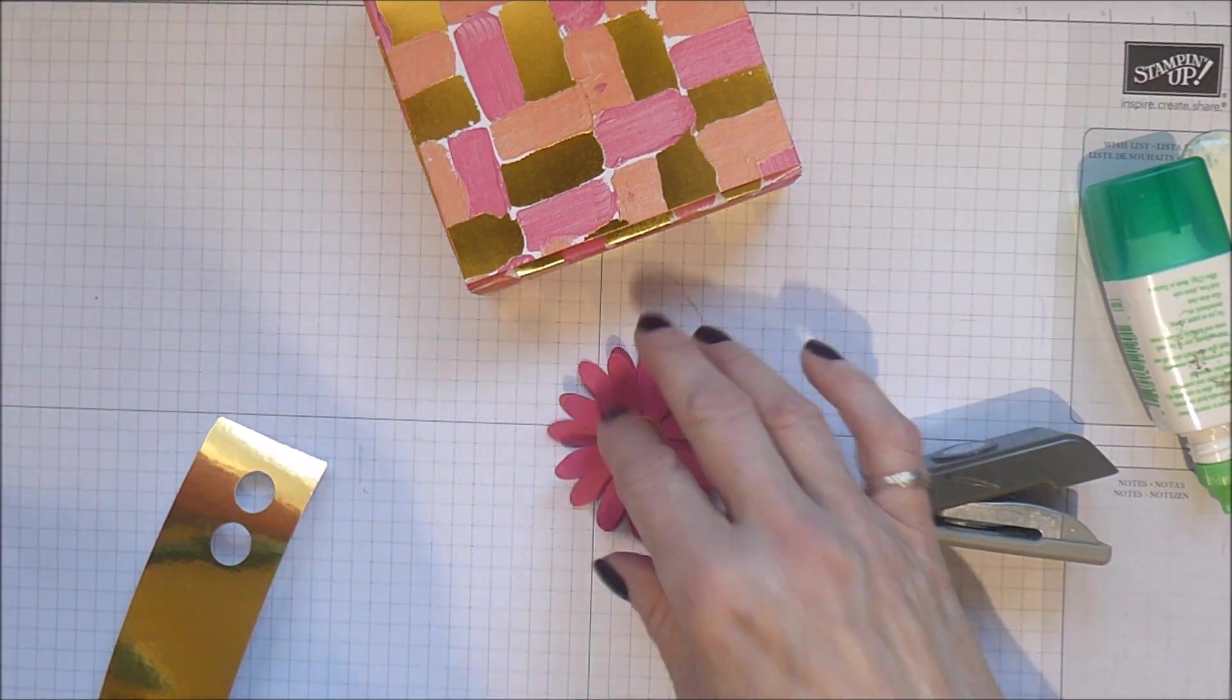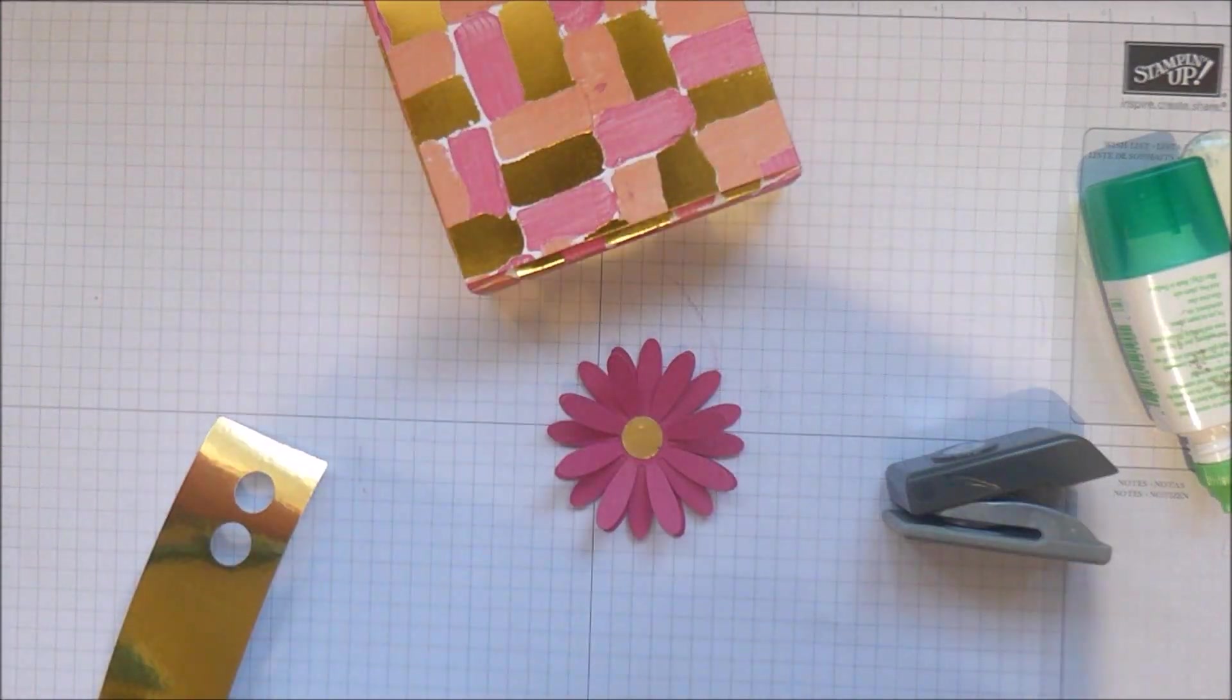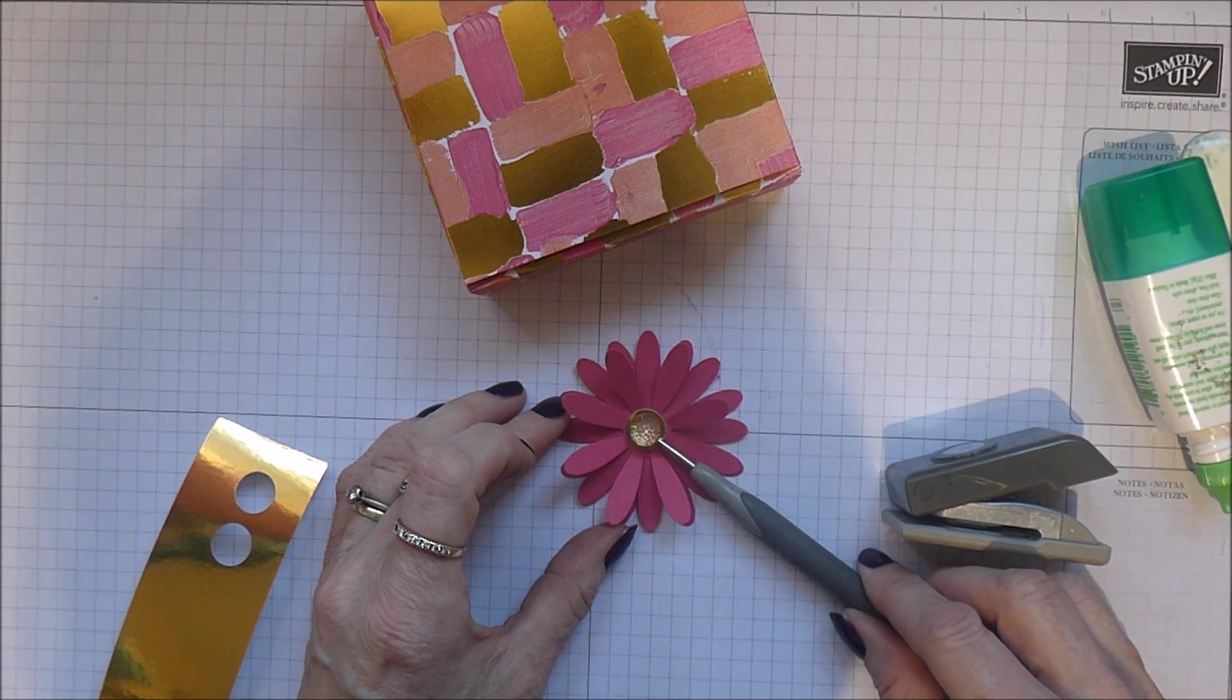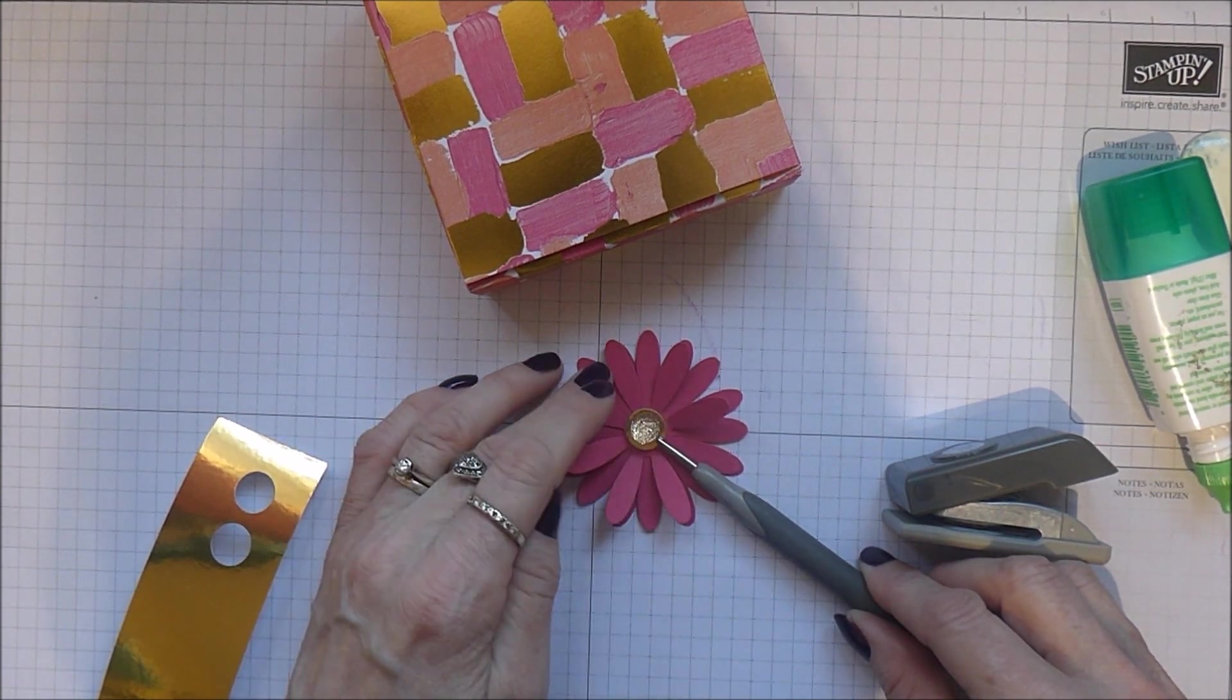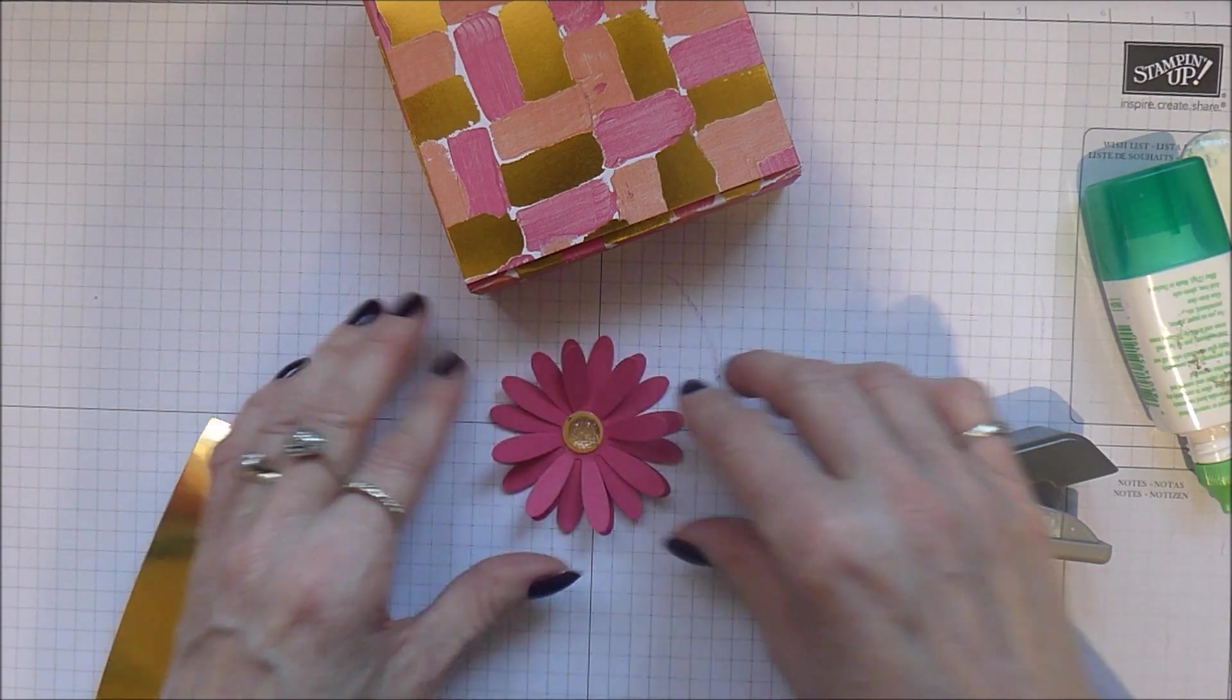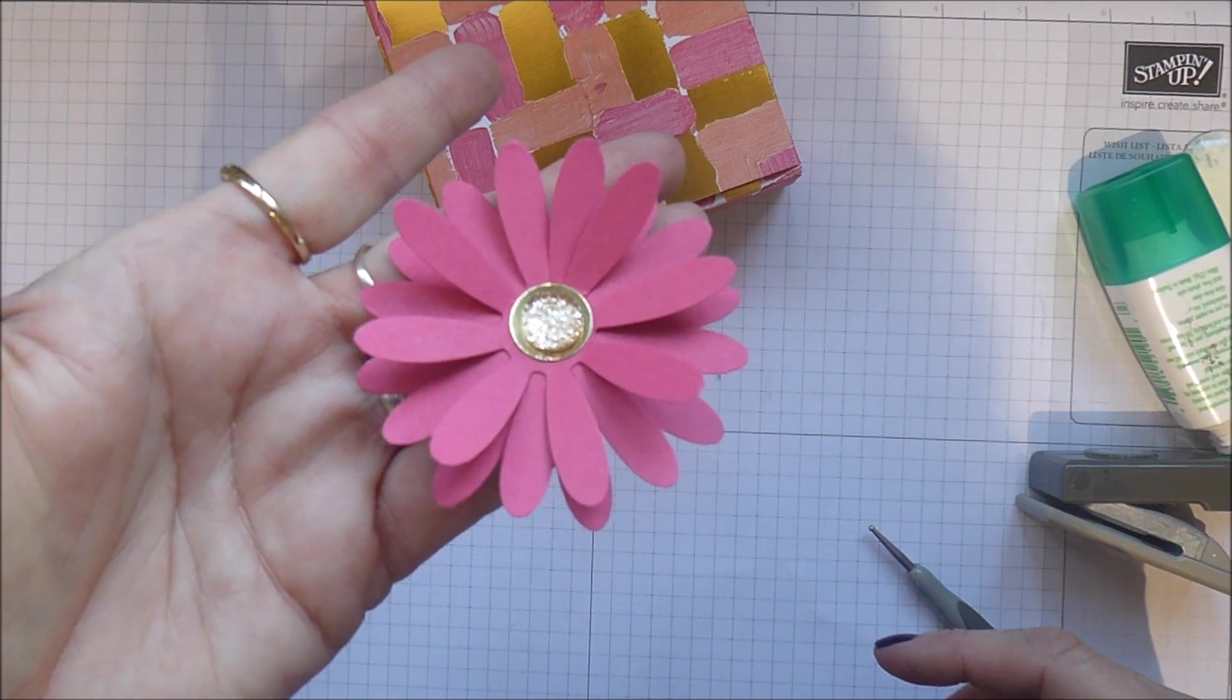And I just want to finish off the centre of that flower with one of these gold faceted gems. Just pop it on the end of my stylus. And into the centre. So that just makes a really pretty topper.